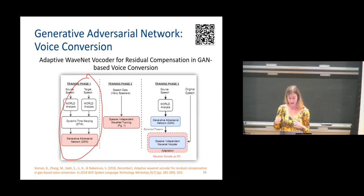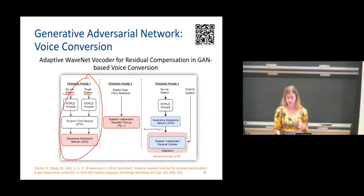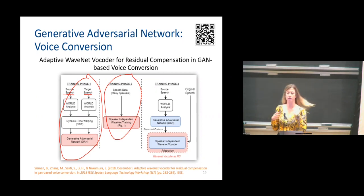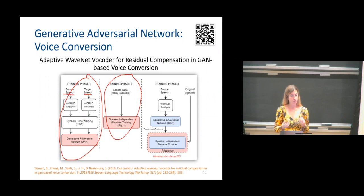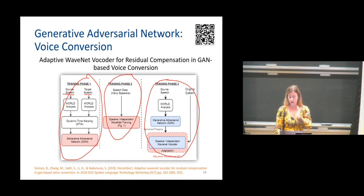Because this is parallel data training, we have source speech and target speech. We first align them frame by frame, making sure they are aligned with dynamic time warping. Then we train a generative adversarial network to learn the mapping between these two speakers. In training phase two, we train a WaveNet vocoder. The trick is you cannot use lots of target data — so in training phase two, we don't see the source or target speakers; we just leverage publicly available data and train the WaveNet vocoder.